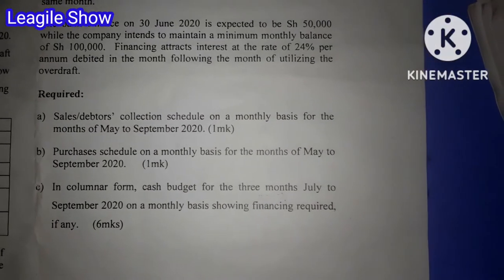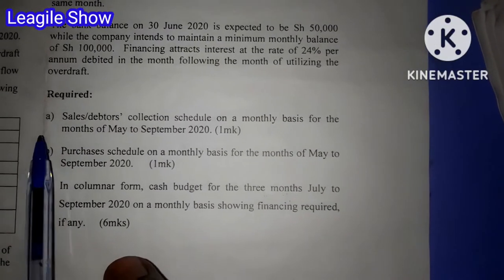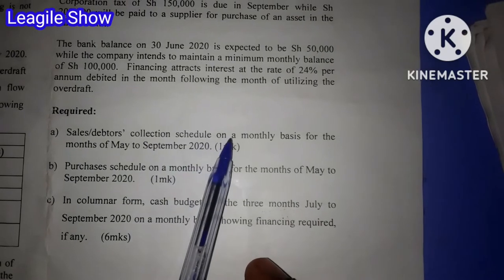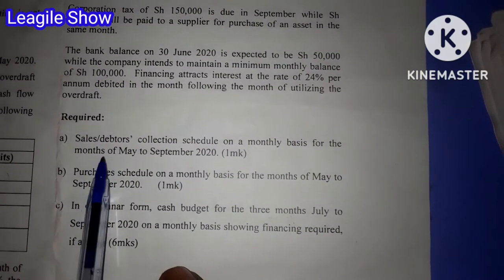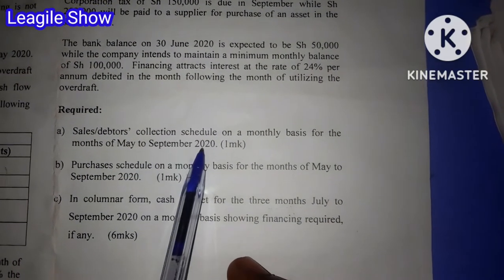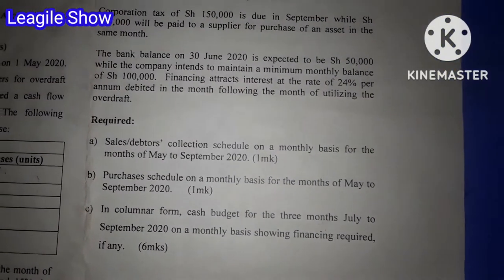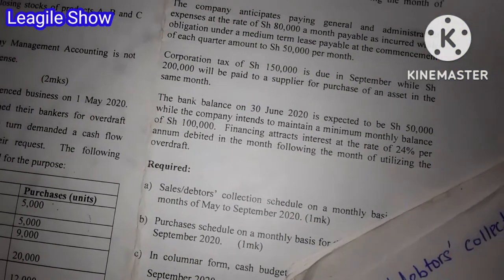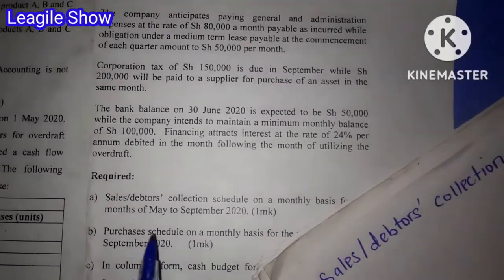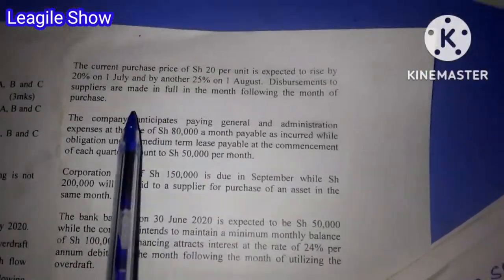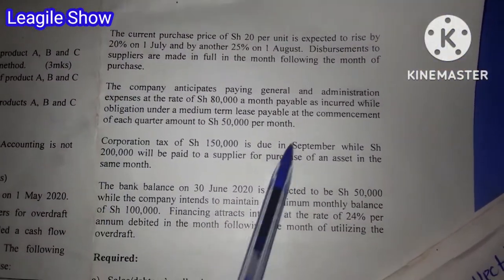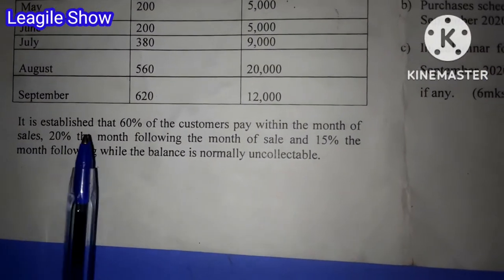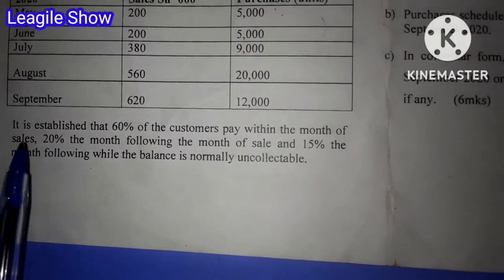If you check at part E, we are required to calculate the sales or debtors' collection schedule on a monthly basis for the months of May to September 2020. That is the calculation we're going to handle in this video. Remember, it is not affected by the additional information here — we are only going to use the additional information affecting the sales.